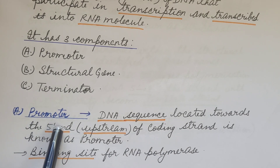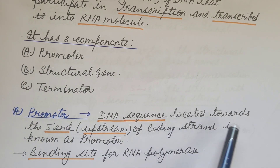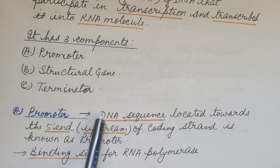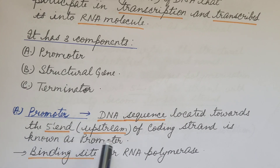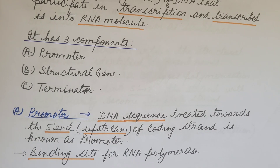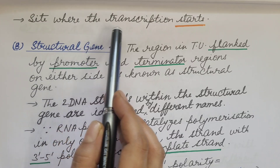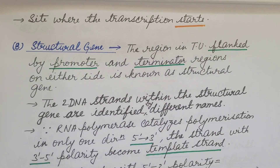First, the promoter. The DNA sequence located towards the 5' end — that is, upstream of the coding strand — is known as the promoter. It is the binding site of RNA polymerase and the site where transcription starts.